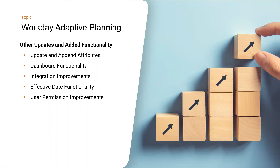Jumping back to other updates: you can now add new account-level and custom dimension attributes and attribute values, as well as update attributes and attribute values with one import — saving significant time and effort. You'll also be able to use Contra accounts in Adaptive Planning to help align your account hierarchy with your source system.